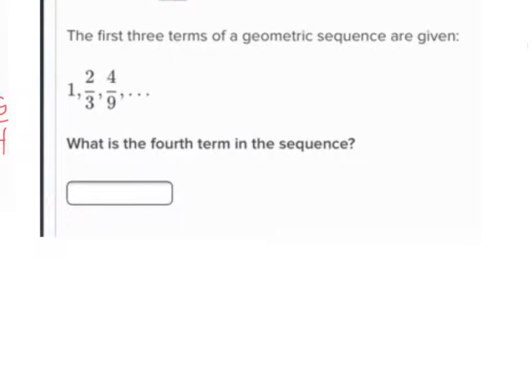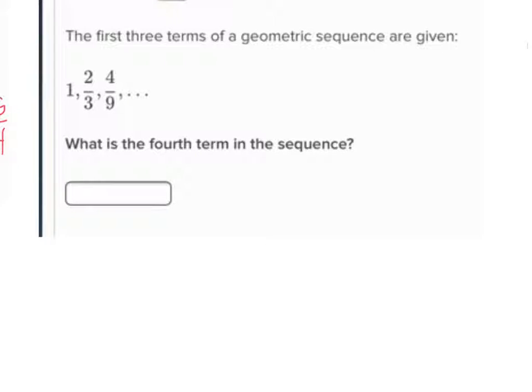The key to each one of these is figuring out what they're multiplying by. So look at this one. And so on this one, my sequence goes 1, and then 2 thirds, and then 4 ninths, and I'm looking for the fourth one, right?